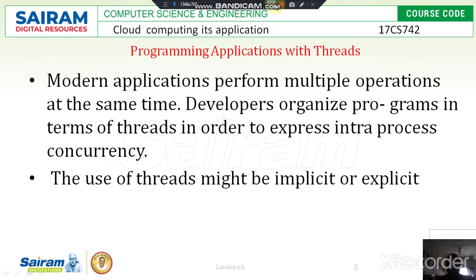Good morning students. Today I am going to talk about programming applications with threads. We are going to use two types of programs: thread implicit as well as thread explicit. The implicit method is where tasks or applications are executed internally by using APIs — application program interfaces — meaning whatever the task or program is executed internally.